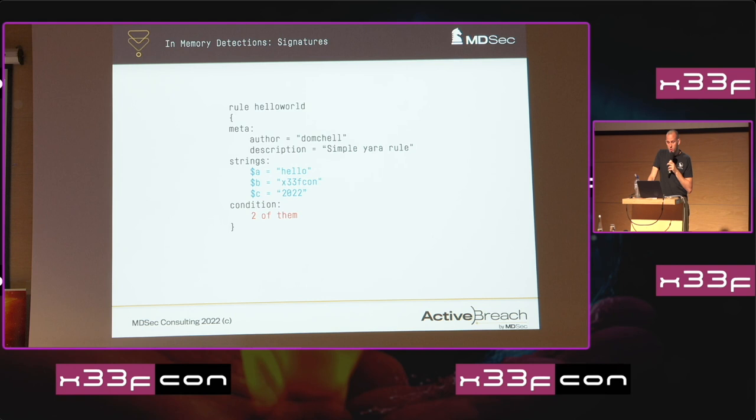A simple Yara rule might look something like this: scan this process memory and if you spot two of these specific strings — like 'Hello ZoneCon 2022' — then flag it. Let's look at how this might apply to Cobalt Strike.